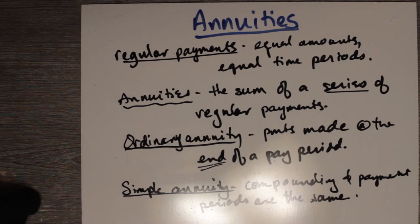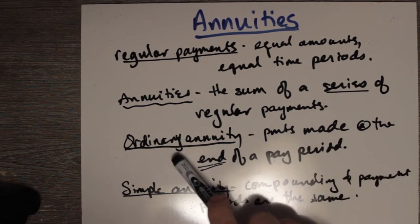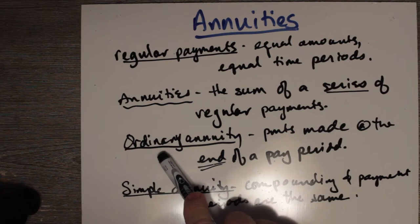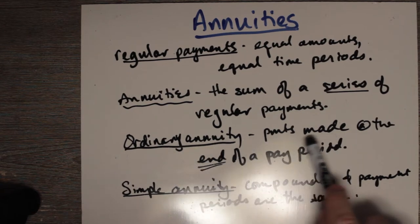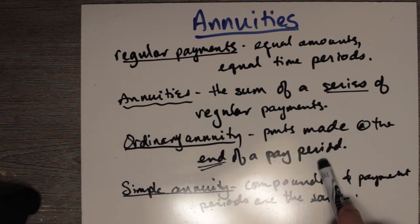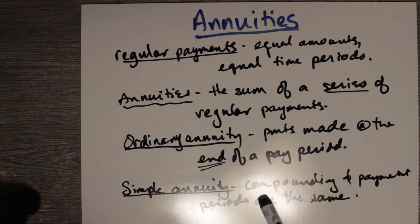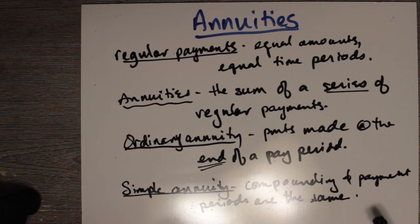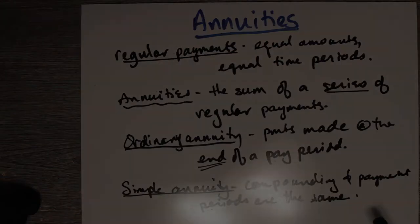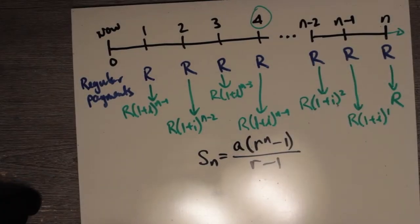An annuity can be illustrated using a timeline. An ordinary annuity is where the payments are made at the end of the pay period, and a simple annuity is where the compounding and payment periods are the same. Most of the time we'll be discussing ordinary simple annuities.